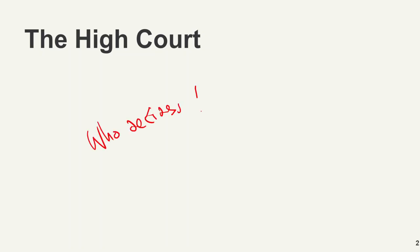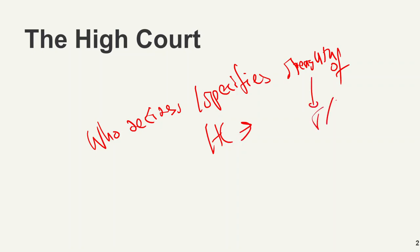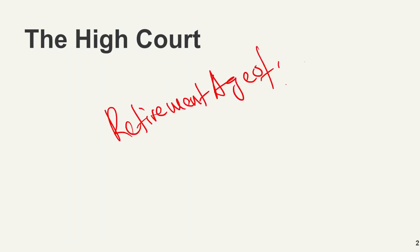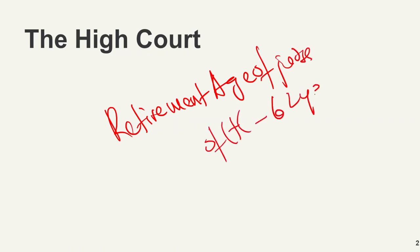First important question: who decides or specifies the strength of the High Court — meaning how many judges will be there? It is the President of India, not the Constitution. Second important question: what is the retirement age of a judge of a High Court? The retirement age is 62 years.